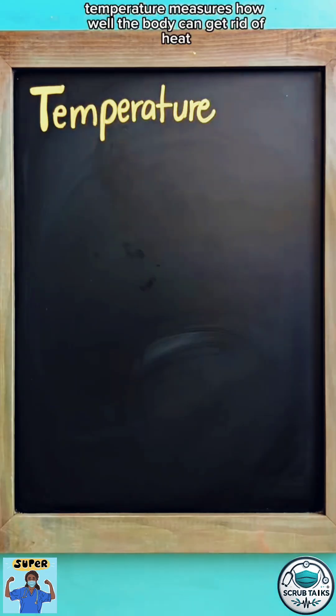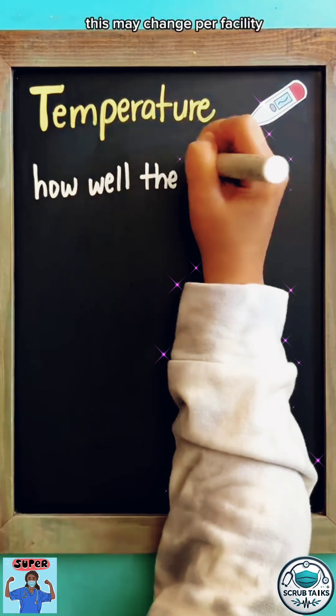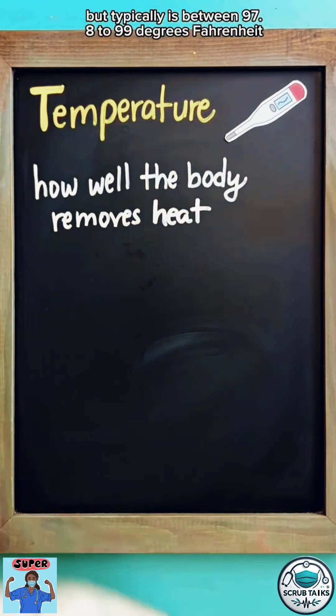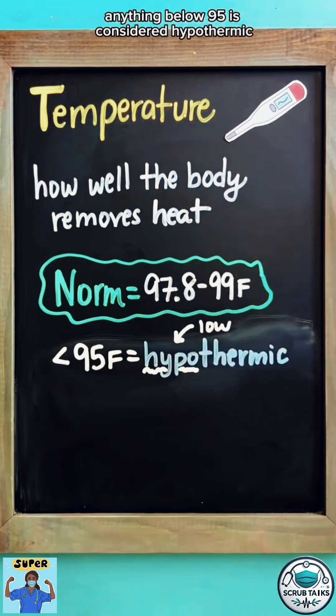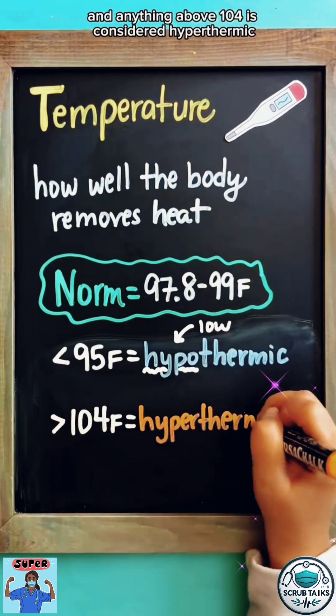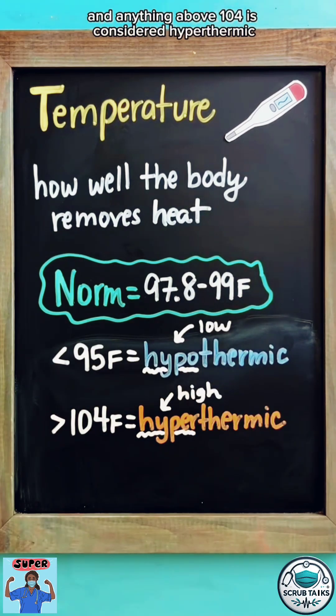Temperature measures how well the body can get rid of heat. The range for this may change per facility, but typically is between 97.8 to 99 degrees Fahrenheit. Anything below 95 is considered hypothermic and anything above 104 is considered hyperthermic.